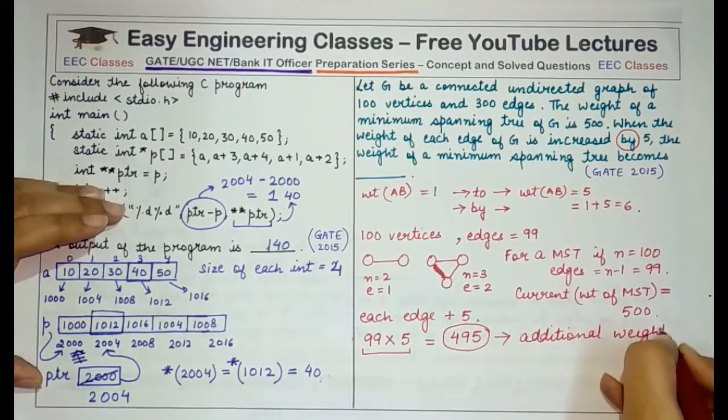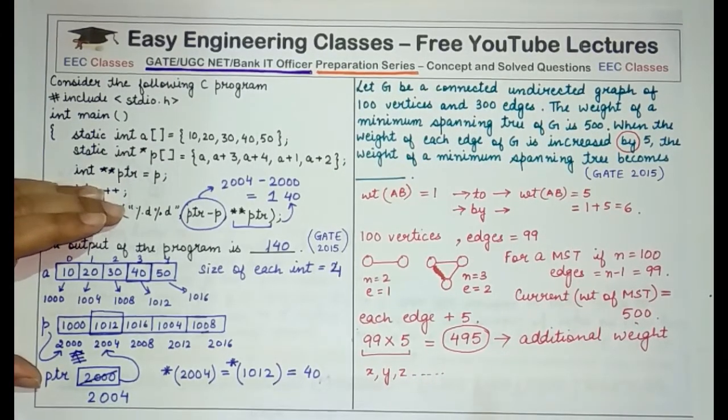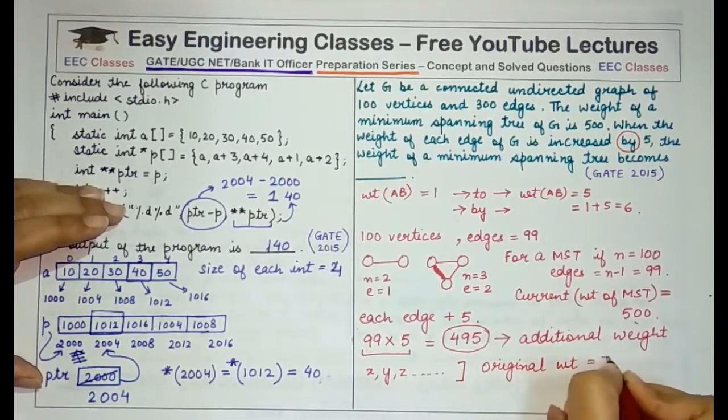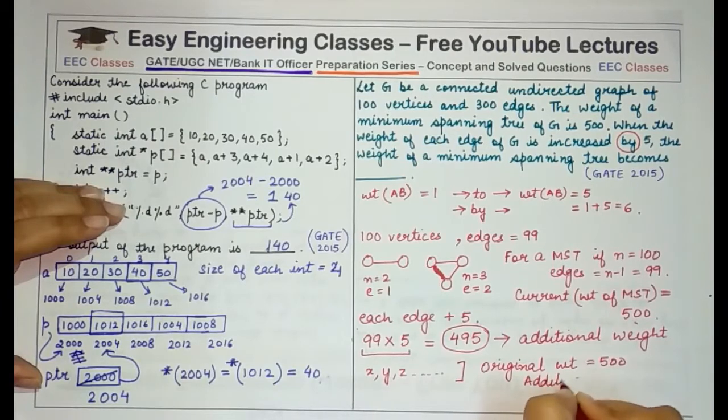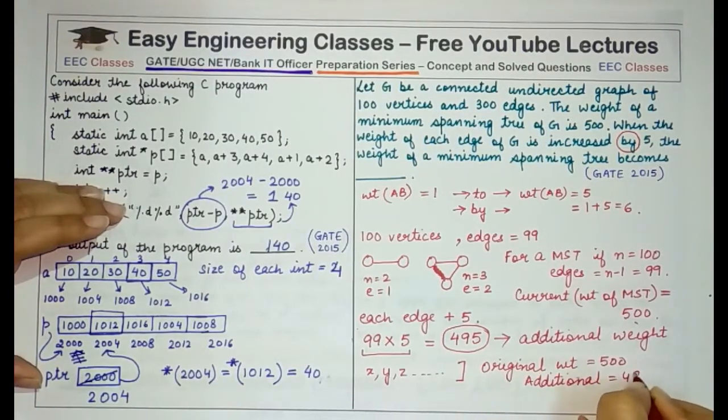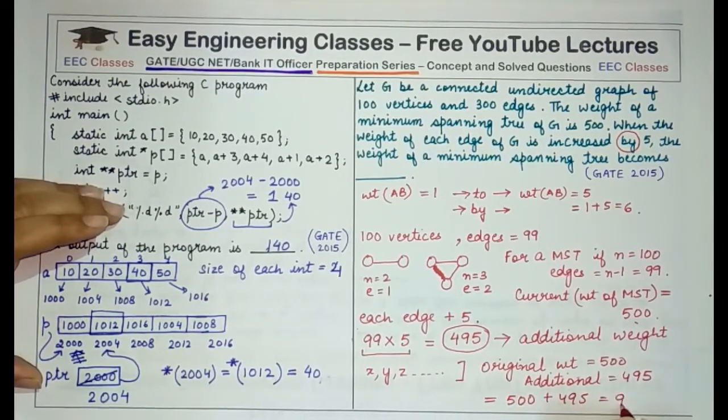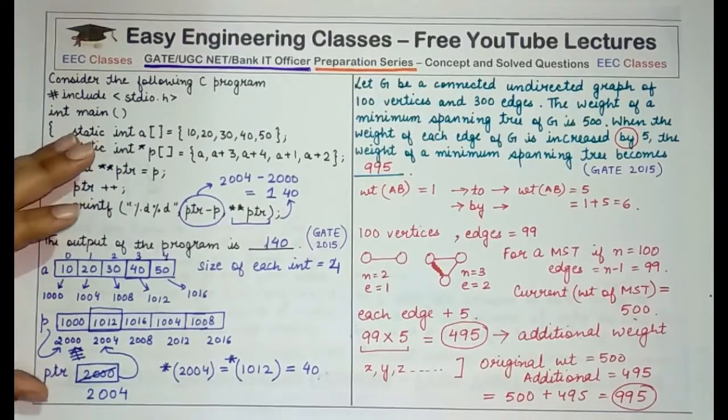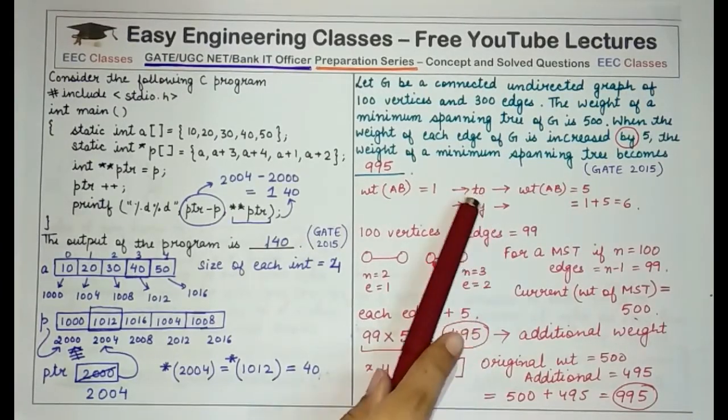So originally each edge has some weight and there would be such 99 weights because there are 99 edges in the MST. The total of all the original weights or the sum of original weight was 500. An additional 5 is added to every edge and the additional weight is 495. So now the original MST would weigh 500 plus 495. So the new weight becomes 500 plus 495 which is equal to 995. This is the weight of the new MST. So in this question you don't have to make the mistake of returning or writing 495 as the answer. That is why I explained you the concept of to and by in such cases.